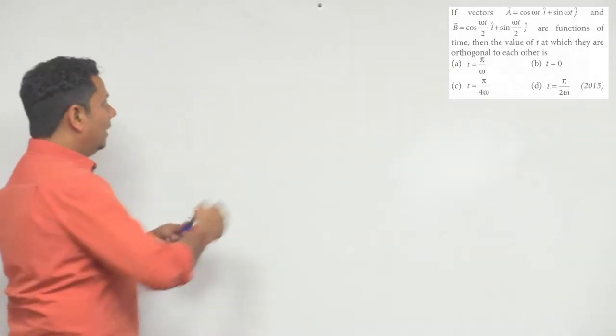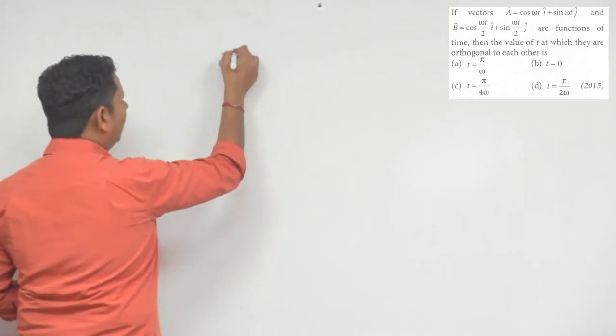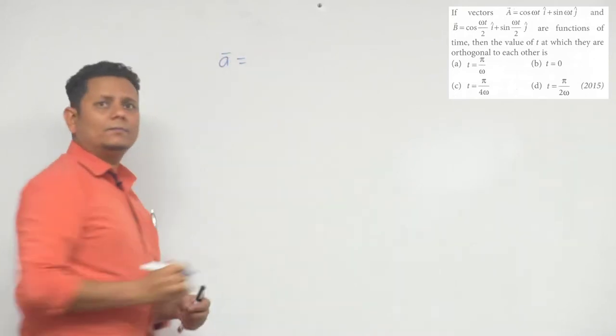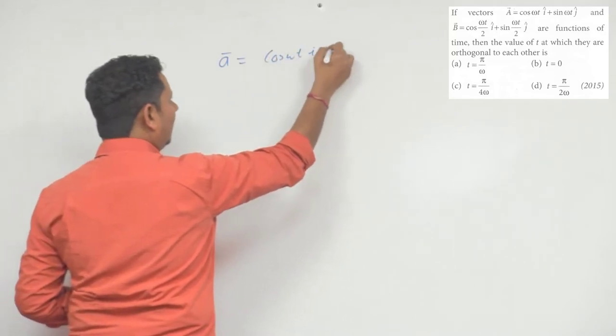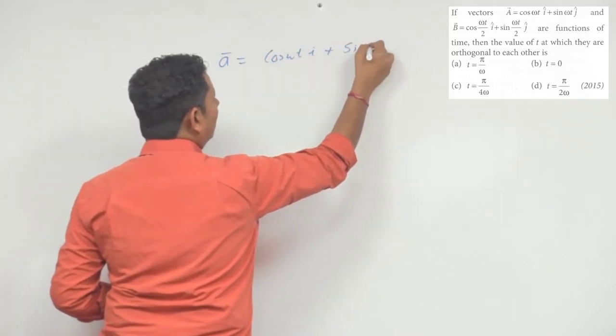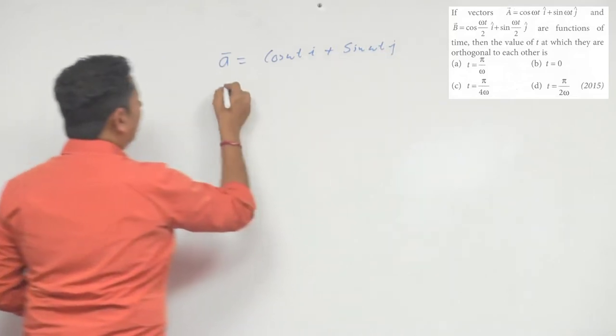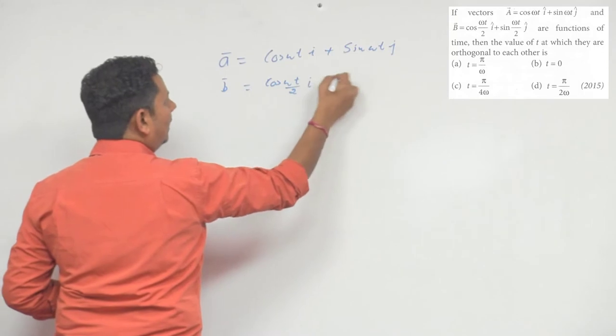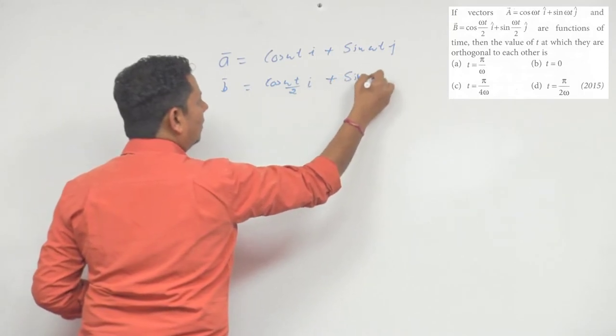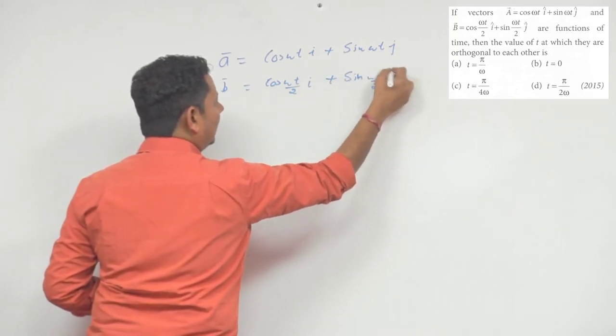पहले दोनों vector लिख लेते हैं. अपने को दिया हुआ है a vector that is equal to cos omega t i cap plus sin omega t j cap. दोसरा vector b vector दिया हुआ है cos of omega t by 2 i cap plus sin of omega t by 2 j cap.